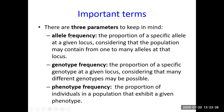Some important parameters: allele frequency, genotype frequency, and phenotype frequency. Phenotype means what you can see — the trait. For example, in a class of 10 students, if seven have dark eyes, that is the phenotype frequency: seven out of 10. Genotype frequency asks whether the dark eye trait is caused by a dominant or recessive mutation — is it heterozygous or homozygous dark eye?